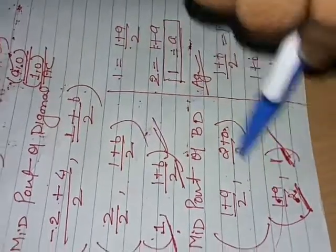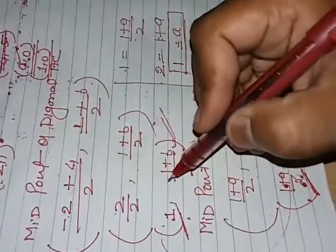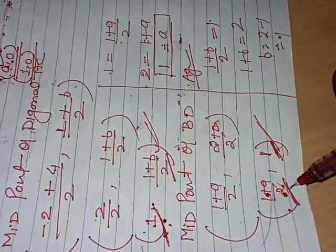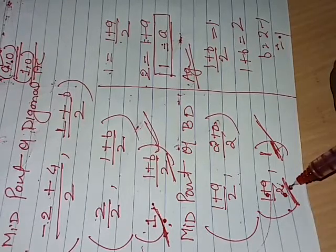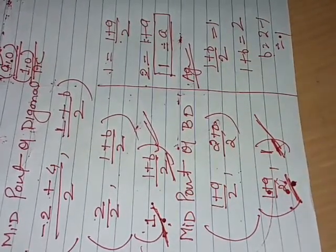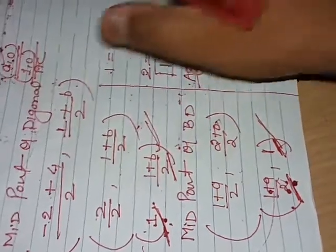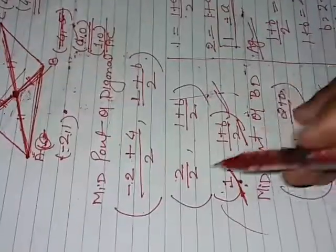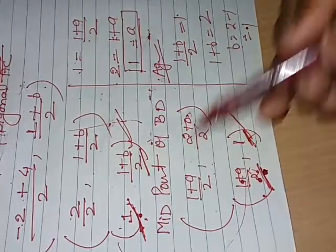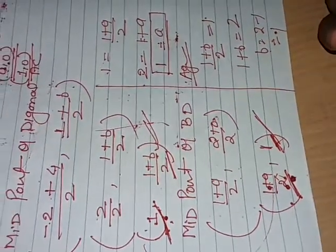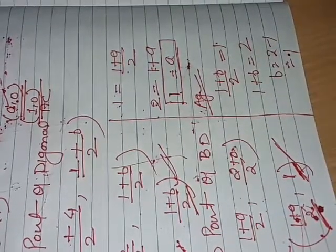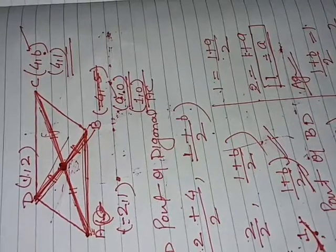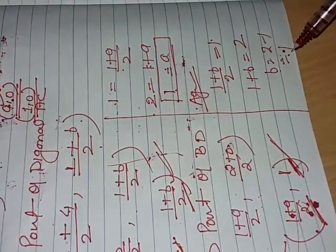This part wasn't clear — let's revisit. The first diagonal gives a midpoint with a certain x-position, and the second diagonal gives a midpoint with x-position (1+a)/2. Since both midpoints are the same point in a parallelogram, the x and y positions must be equal. That's why we set them equal to solve for a and b.